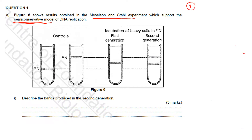The bacteria was first grown in a medium that contains the heavy isotope, nitrogen-15, and the bacteria was grown for 14 generations to ensure that all the DNA of the bacteria incorporated nitrogen-15.